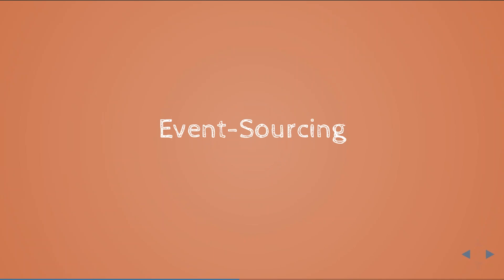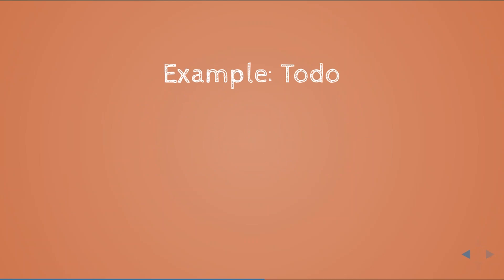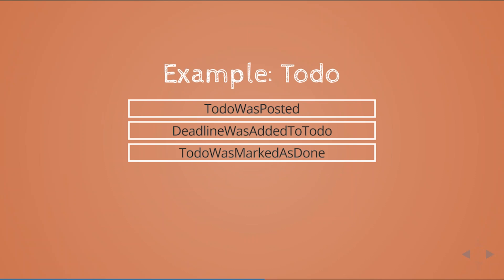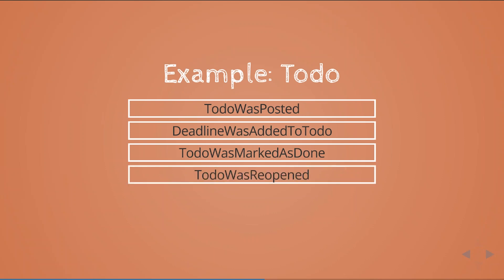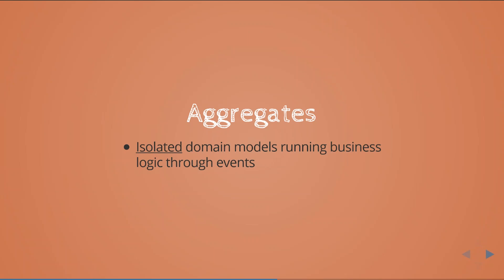Let's talk about event sourcing. With event sourcing we store all changes of application state as a series of events. For example, in a to-do application, we might have events like: to-do was posted, deadline was added to to-do, to-do was marked as done, to-do was reopened, and to-do was marked as done again. All these events are part of an aggregate — an isolated domain model that runs business logic through events.